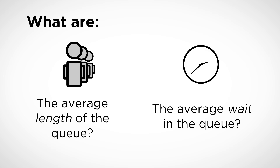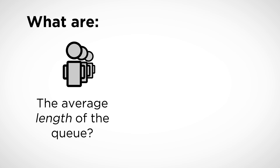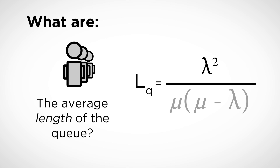The average number of customers waiting in line for the MM1Q is given by the following formula: lambda squared — that's the arrival rate squared — divided by the service rate multiplied by the service rate minus the arrival rate. So once again, lambda squared divided by mu times mu minus lambda.